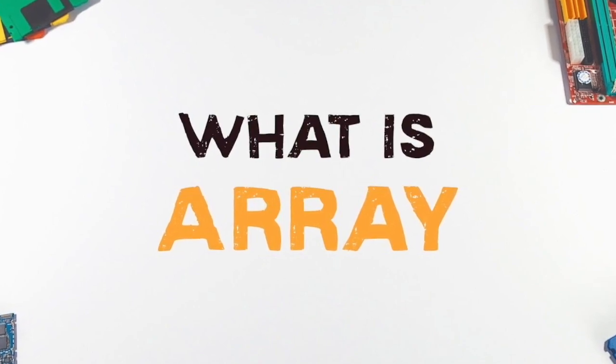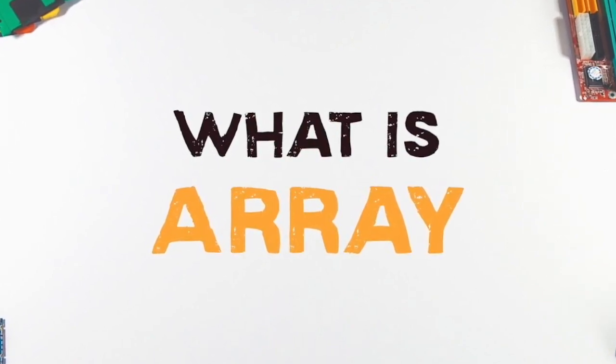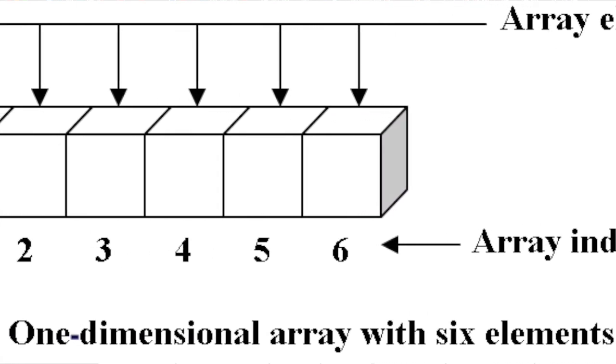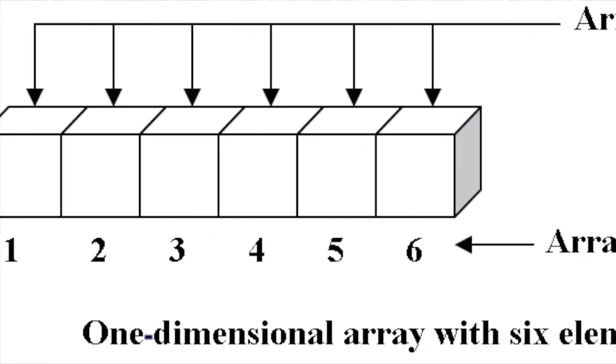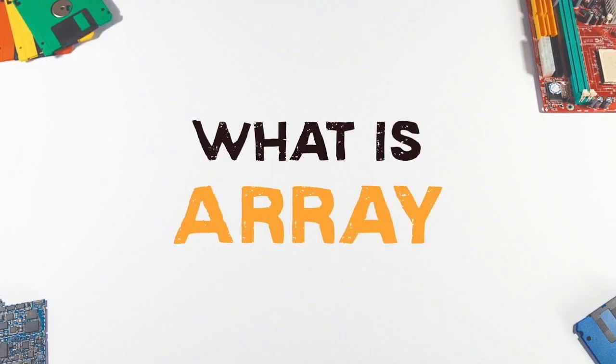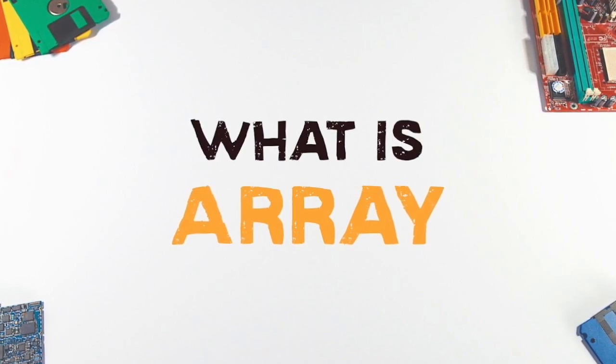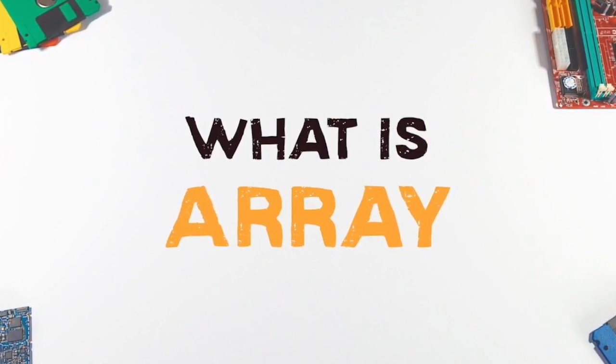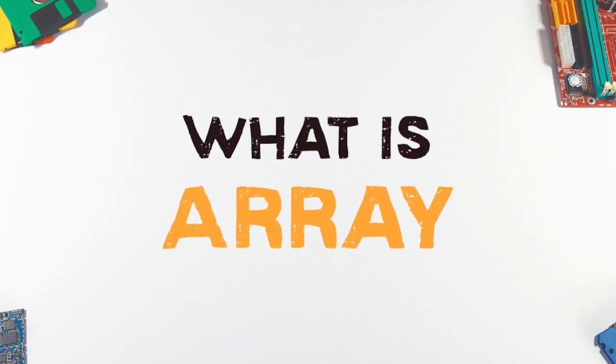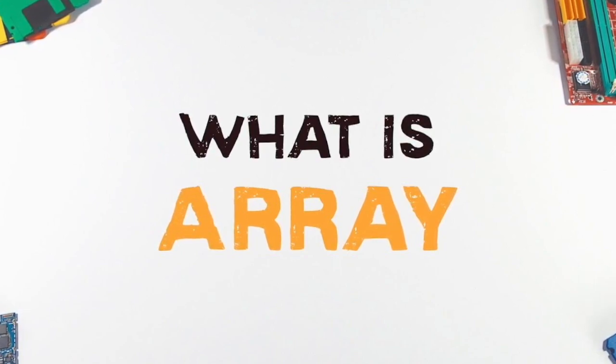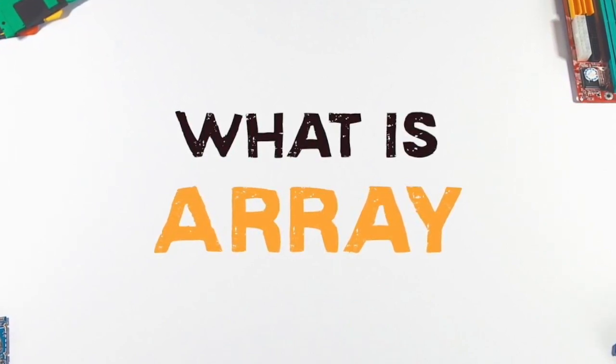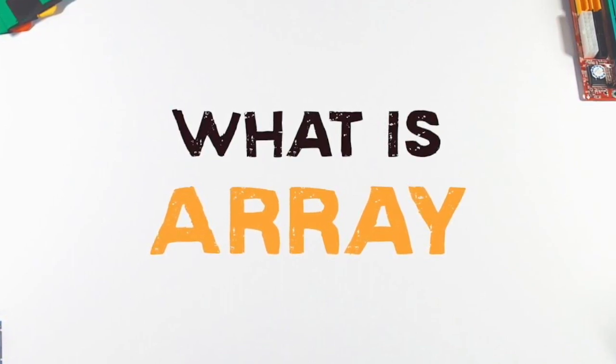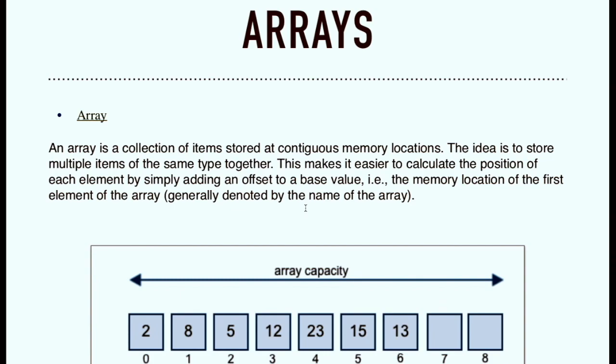An array is stored such that the position of each value can be computed from its index. And we have one more definition of array. Array is a kind of data structure that can store a fixed size sequence collection of elements of the same type. An array is used to store the collection of data but it is often more useful to think of an array as a collection of variables of the same item. I think you get a better idea what is array.